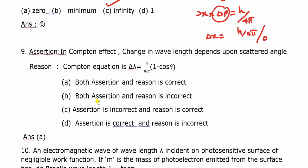Assertion-reason question: In the Compton effect, the change in wavelength depends upon the scattered angle. The Compton equation is delta lambda equals h by mc times (1 minus cos theta), so the change in wavelength depends on the scattered angle theta. Both assertion and reason are correct. The answer is A.